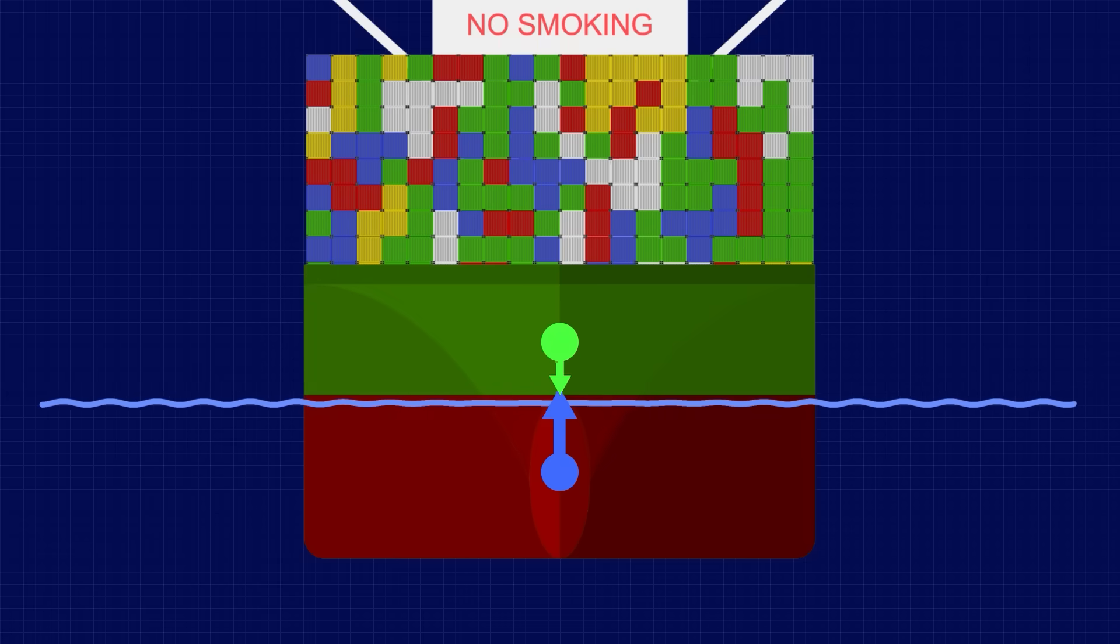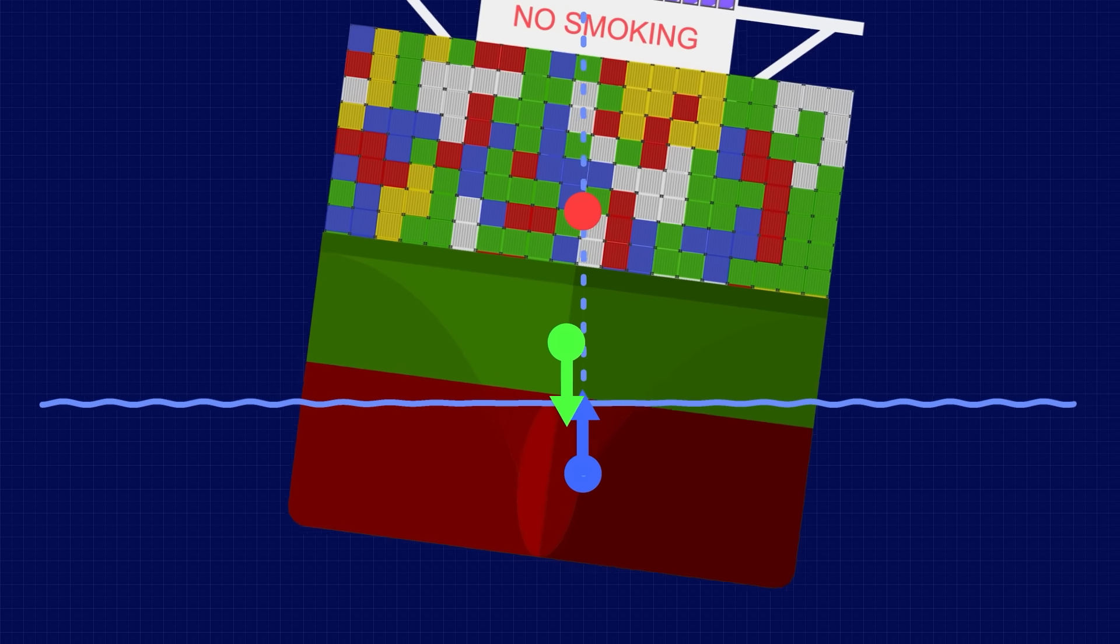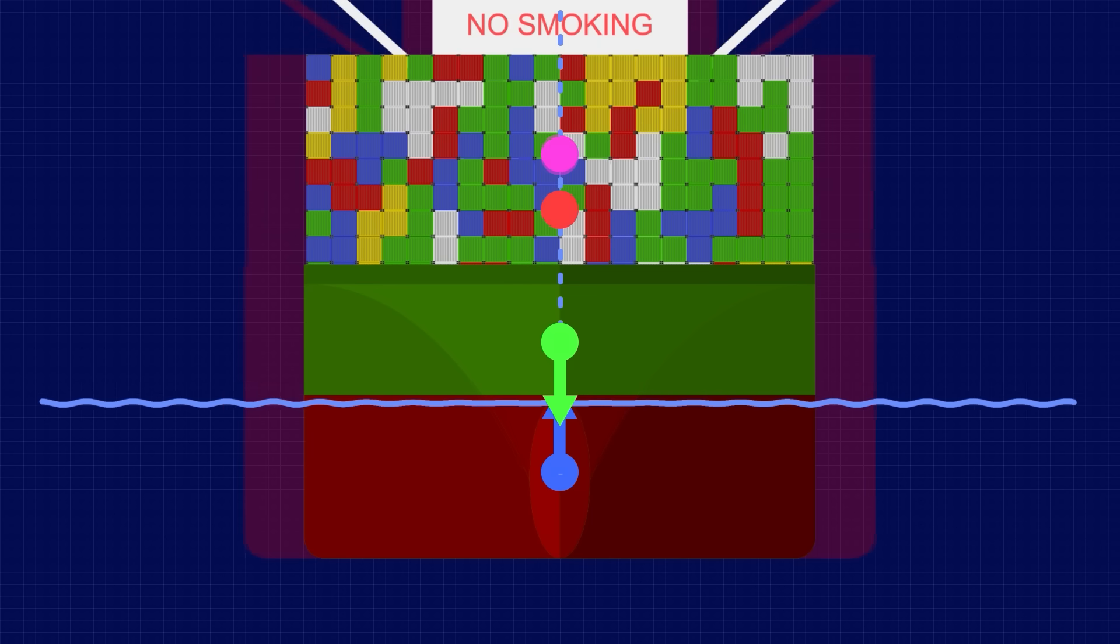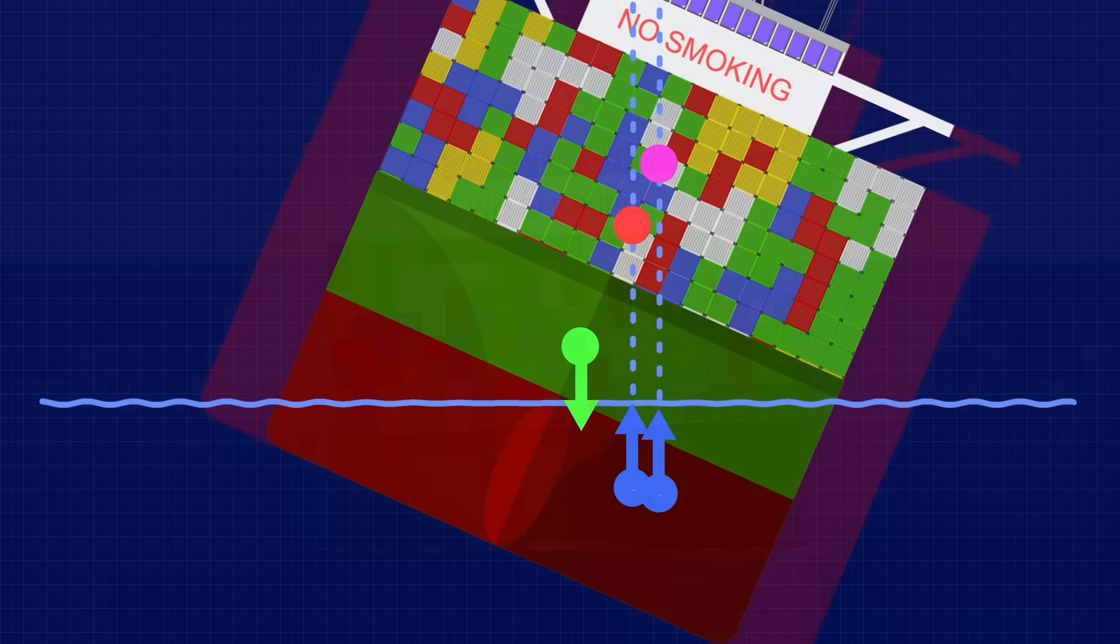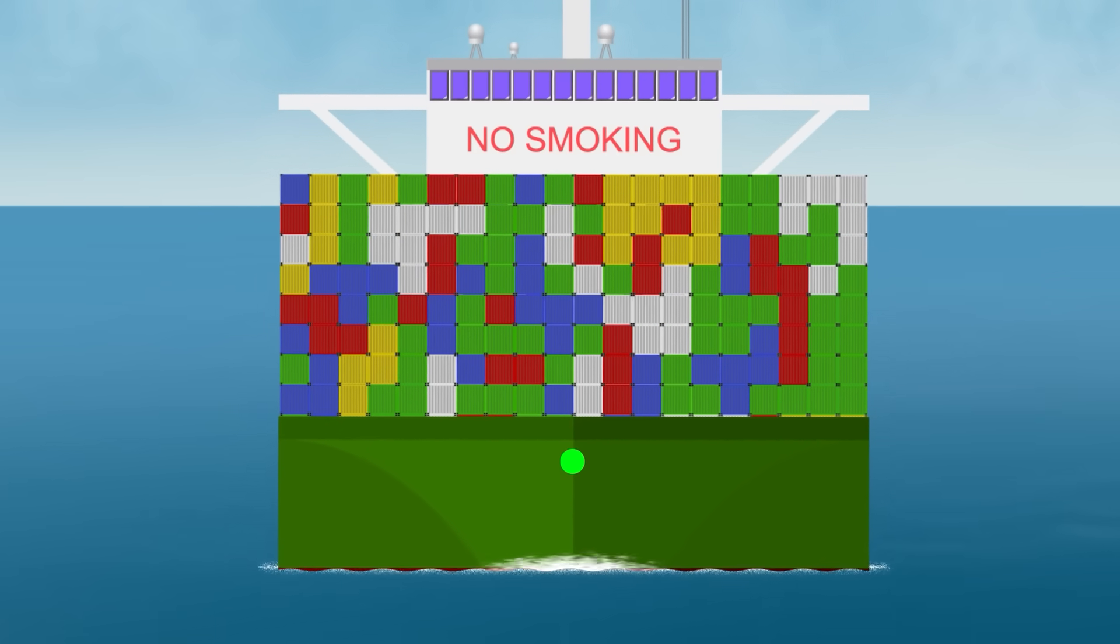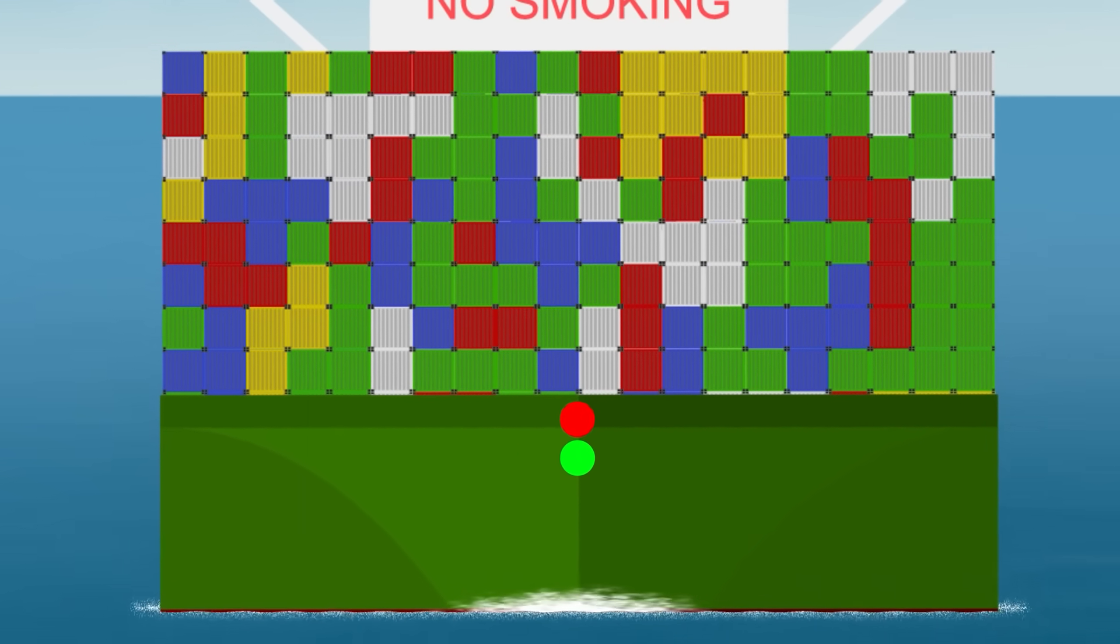Where weight stability relied on a high centre of buoyancy, form stability relies on a high metacentre, the point at which the force of buoyancy acts through the centre line. A wider hull will have a higher metacentre, because a small angle of heel will shift the centre of buoyancy further out. As long as you keep the centre of gravity below the metacentre, form stability ensures that your ship will remain upright.